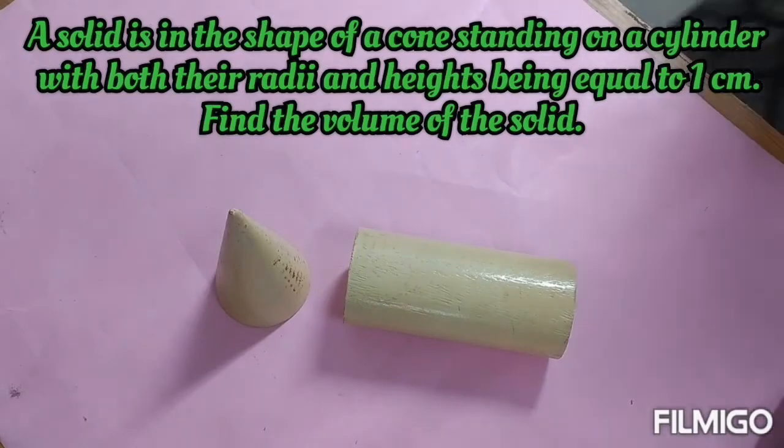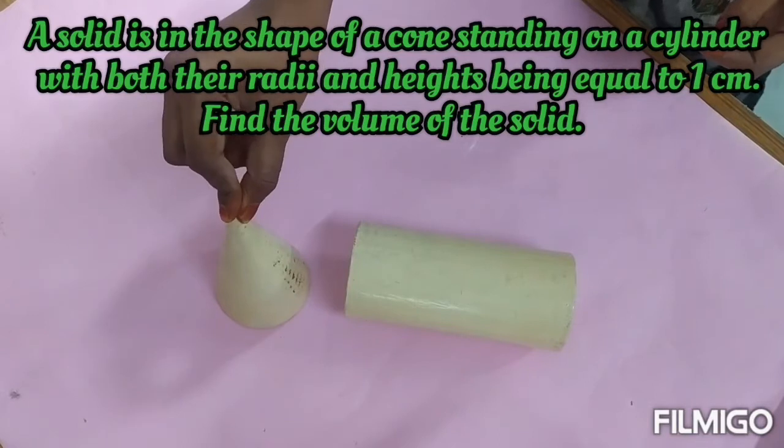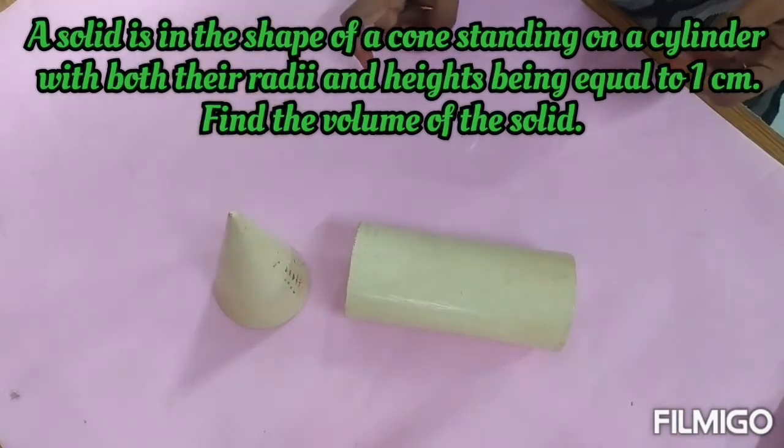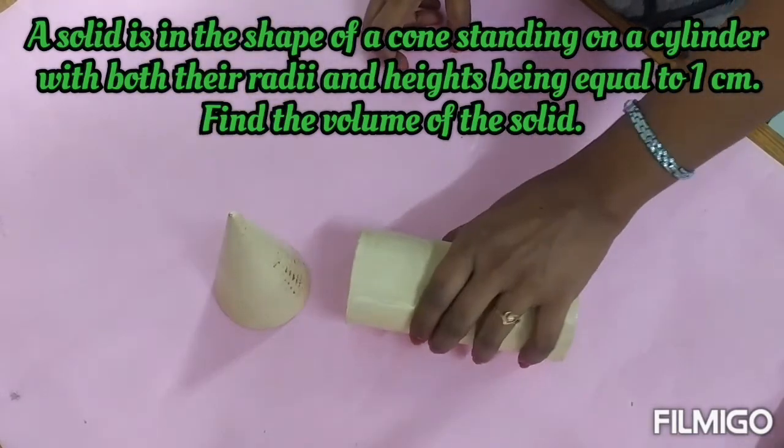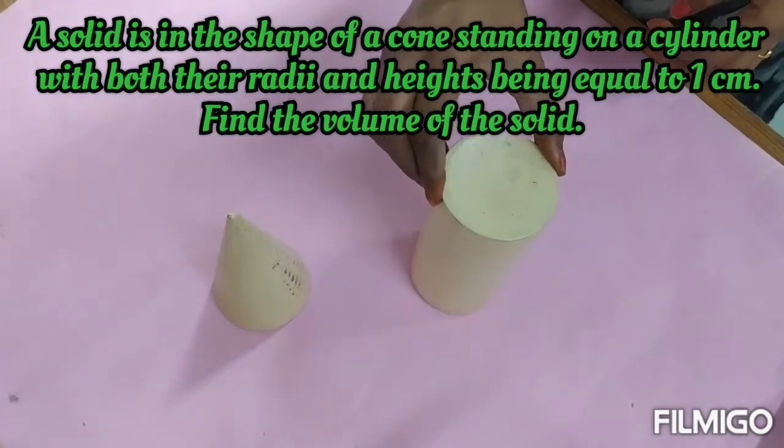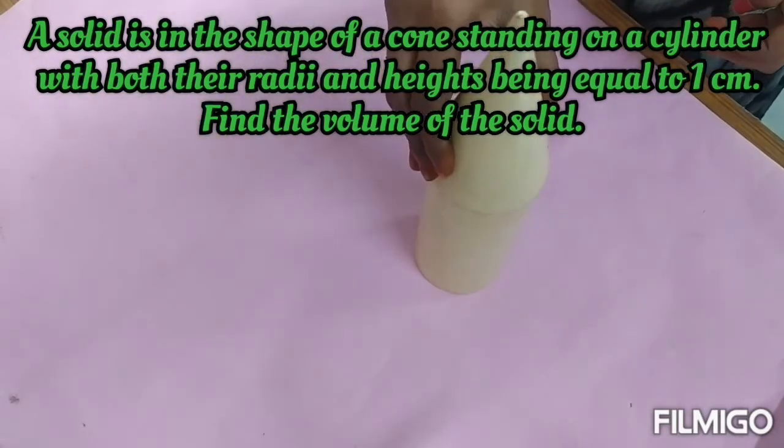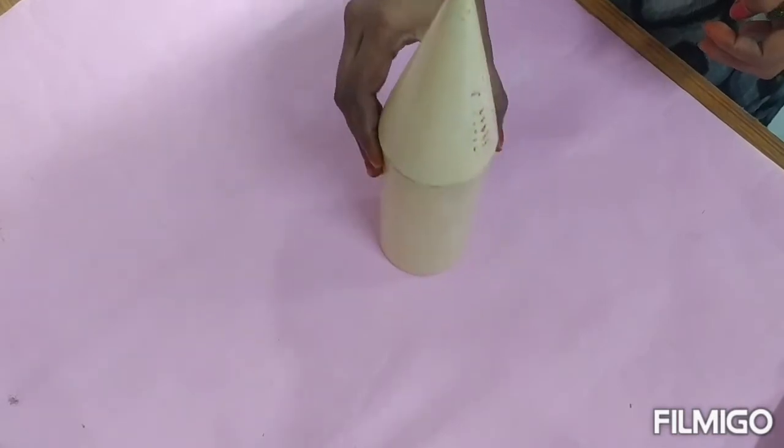A solid is in the shape of a cone standing on a cylinder with both their radii and heights being equal to 1 cm. Find the volume of the solid. Here we have a cylinder - its height and radius is equal to 1 cm. A cone standing on the cylinder - its height and radius is also equal to 1 cm.